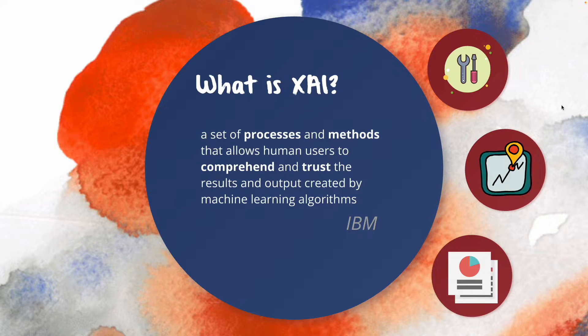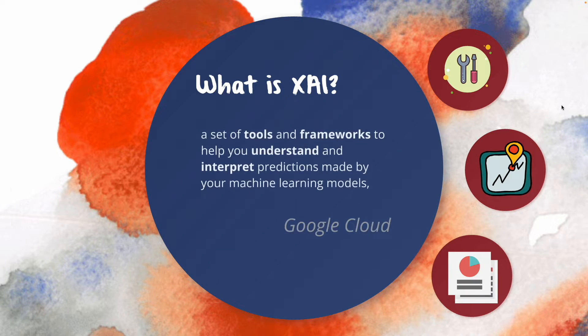According to IBM, explainable AI is a set of process and methods that allows human users to comprehend and trust the results and output created by machine learning algorithms. So focus on the keywords: comprehend and trust. A second definition from Google Cloud, and according to them, explainable AI is a set of tools and frameworks to help you understand and interpret predictions made by your machine learning models.